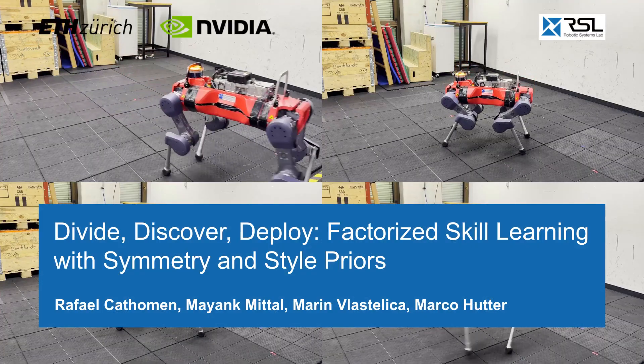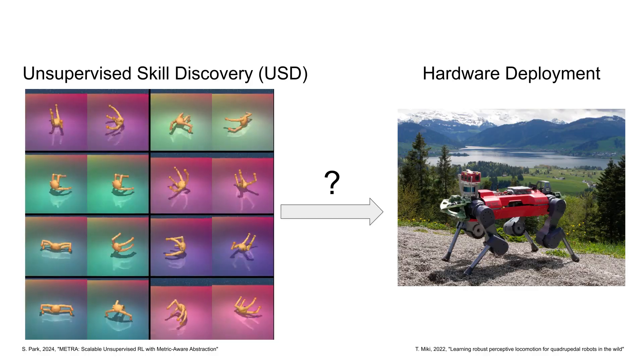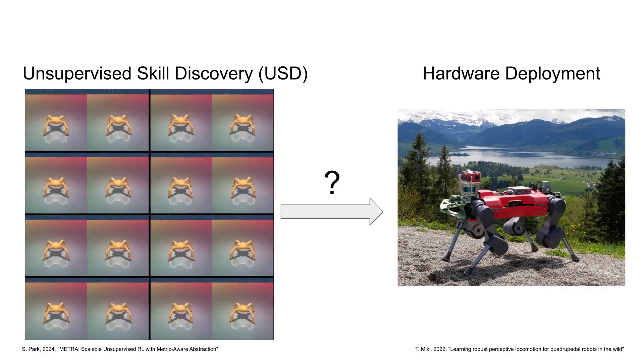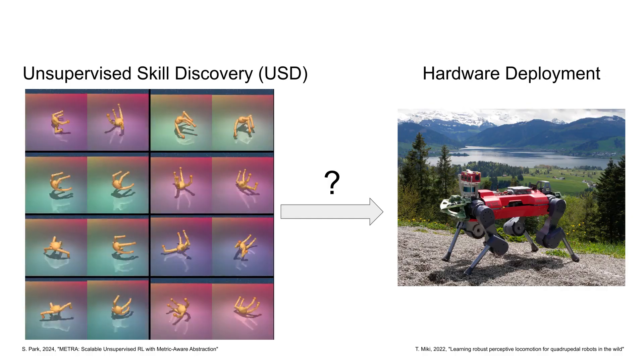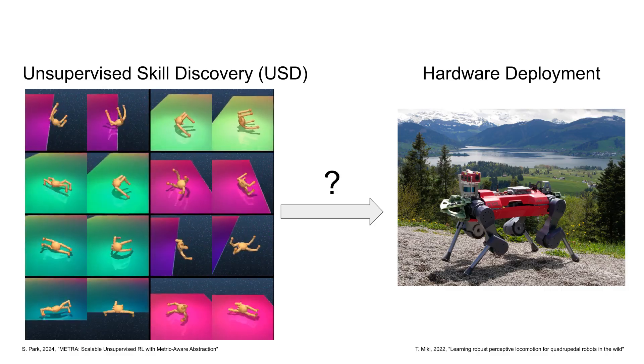To bridge the gap between unsupervised skill discovery and real-world robotics, we present a new factorized learning framework. Our approach is designed to autonomously learn a library of safe, interpretable, and robust skills that can be deployed zero-shot from simulation to hardware.